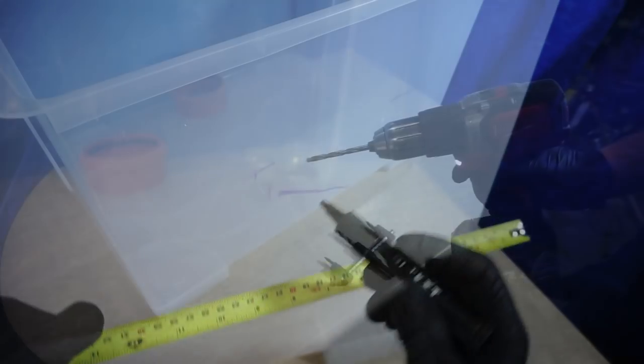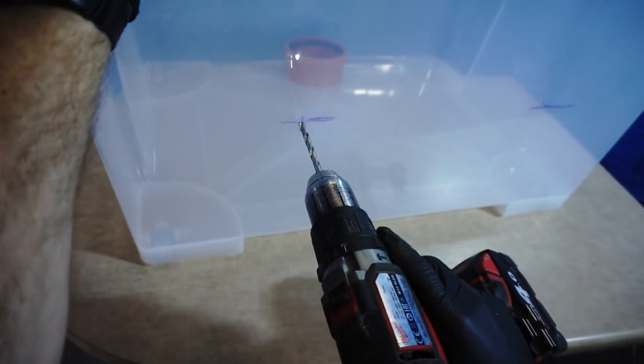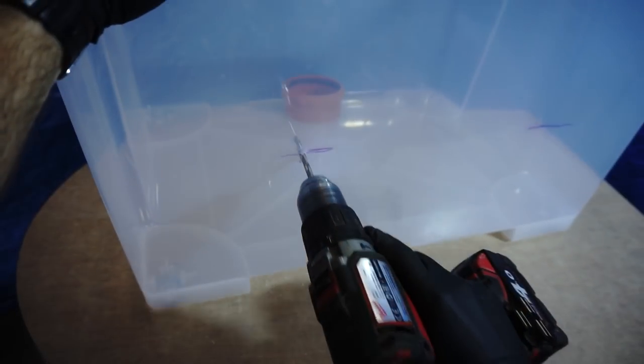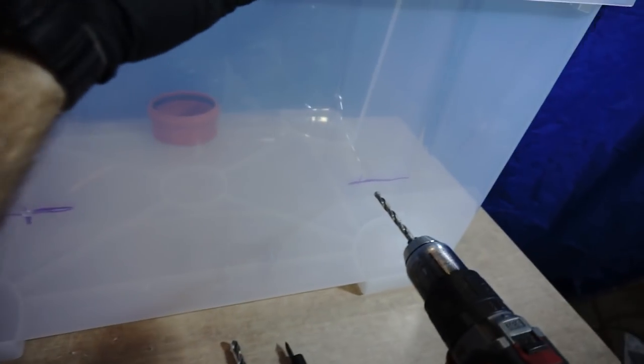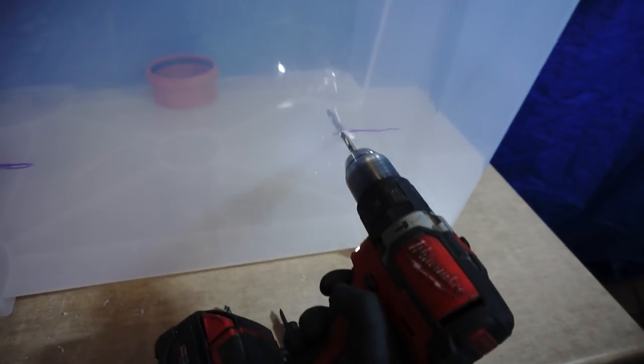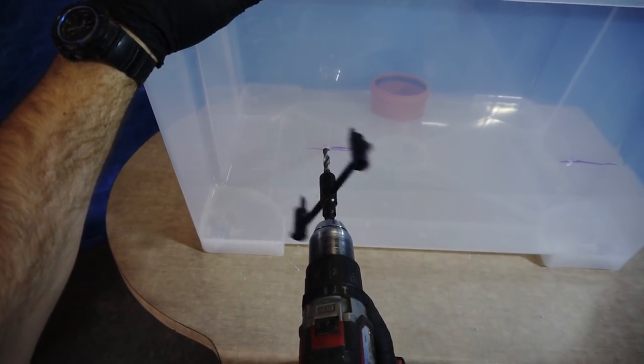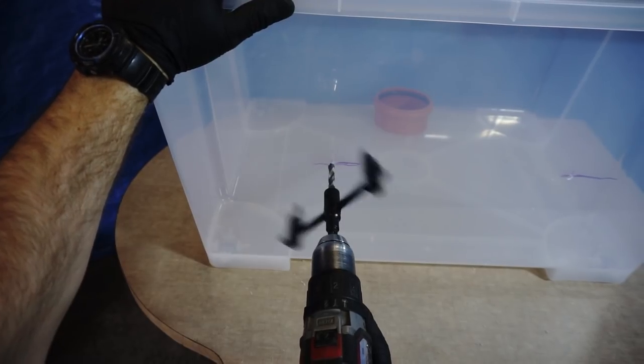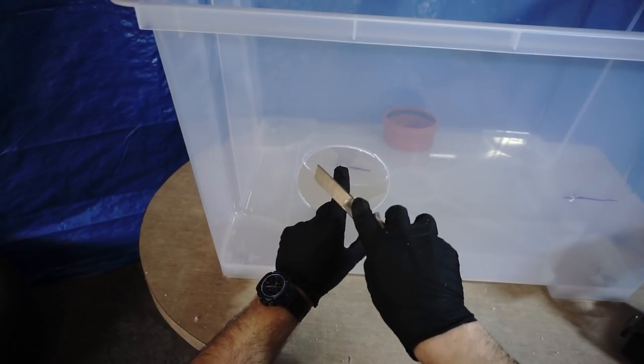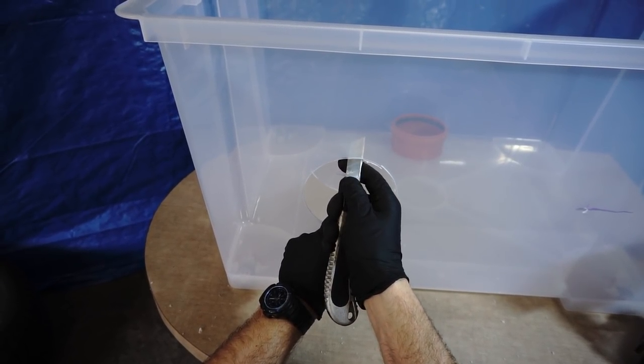Using a smaller drill, make guide holes for the hole cutter. Slowly cut the first hole, but be careful not to damage the box. It's almost done. Now using a knife, cut the rest of the way—just a small cut here at the top.